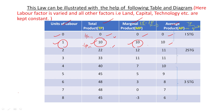When units of labor is 3, the total product is 33 and the marginal product is 11. How did we get 11? It is TP(n) minus TP(n-1), that is 33 minus 22 equals 11. The average product is total product divided by number of units, which is also 11. These are how all the values are calculated.